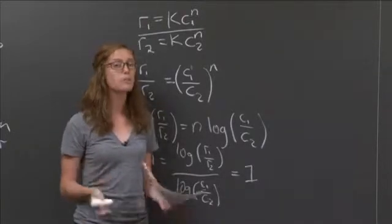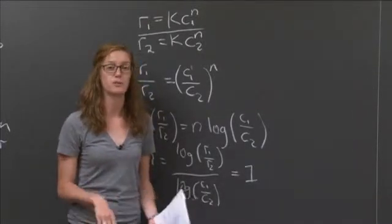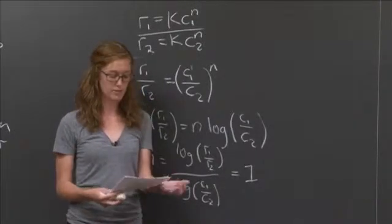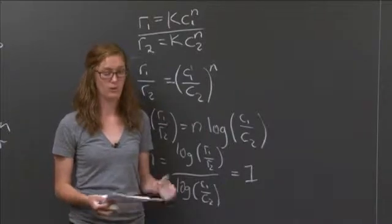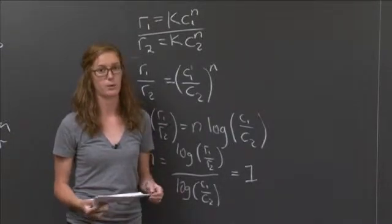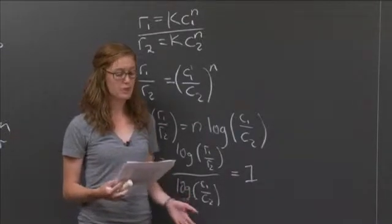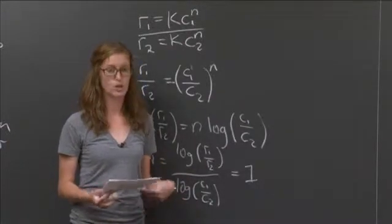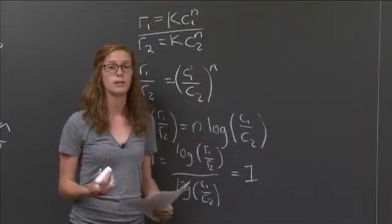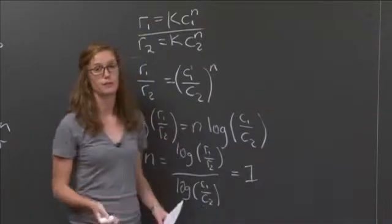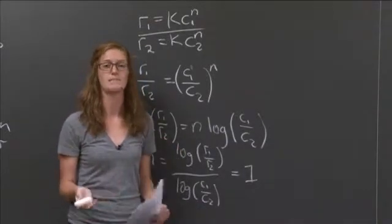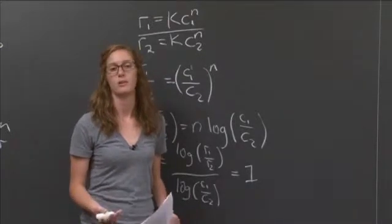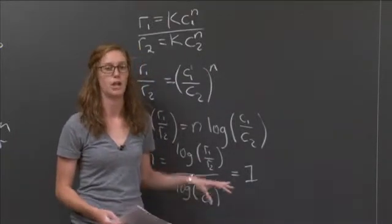Now you could have probably done that by inspection, if you're familiar with the rate law and how to determine that, by just seeing that as the concentration went down by a fourth, the rate also went down by a fourth. However, the question asks you to determine the order of reaction, and so we were looking for more of a derivation of the problem instead of just an inspection, because that shows that you have a familiarity with the general rate law equation.